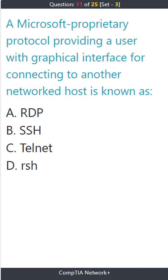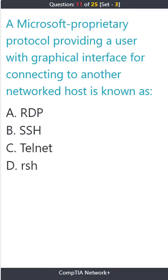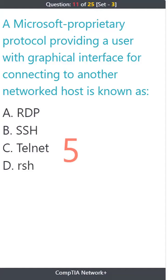Question 11. A Microsoft proprietary protocol providing a user with a graphical interface for connecting to another networked host is known as: A. RDP. B. SSH. C. Telnet. D. RSH. The correct answer is A. RDP.